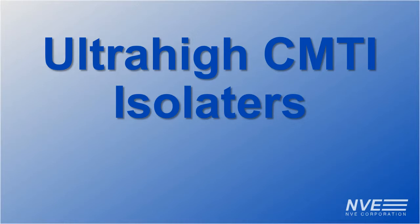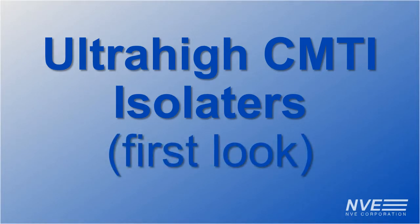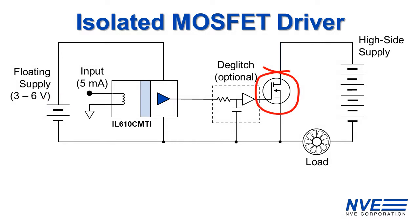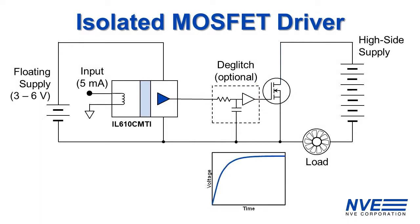Today we have a first look at a remarkable new isolator family that has the world's highest common mode transient immunity. Here's a typical application circuit. A floating supply powers the isolator. As the high side MOSFET turns on, the floating voltage increases with the voltage on the load. This creates a rapidly changing potential between the isolator outputs and inputs.